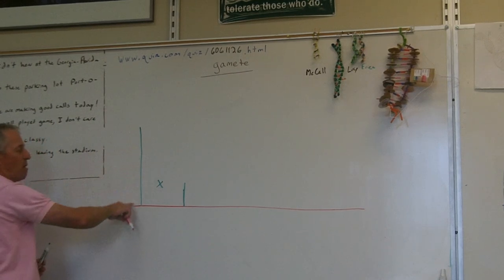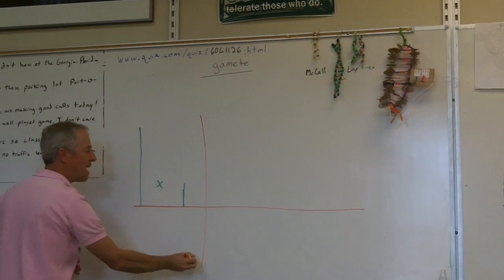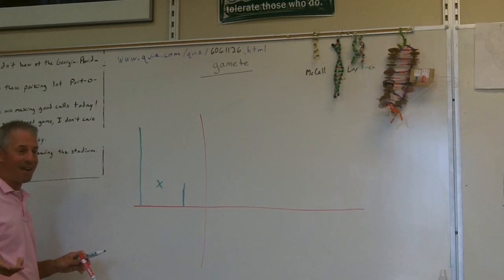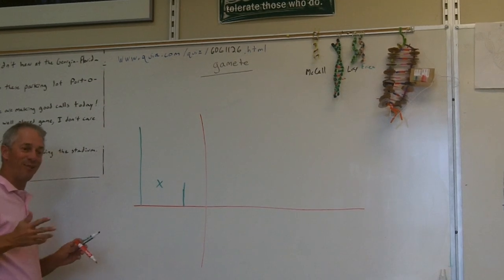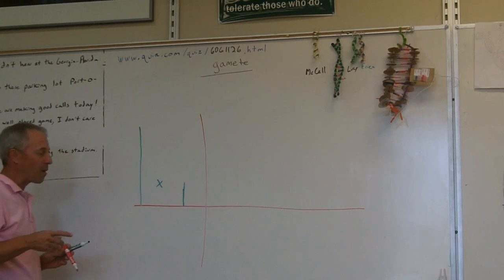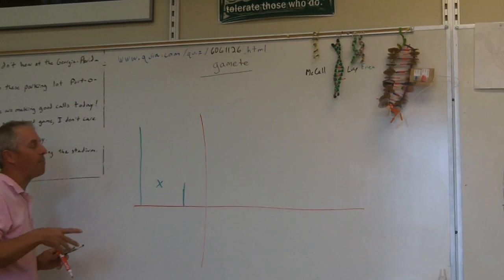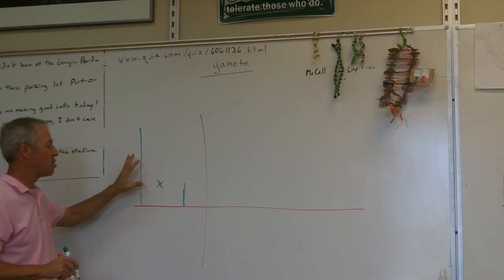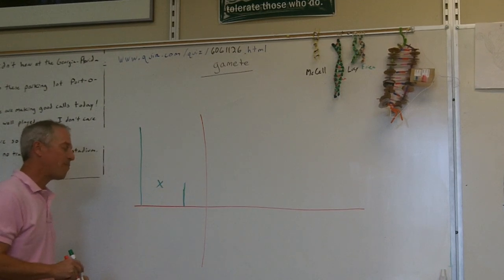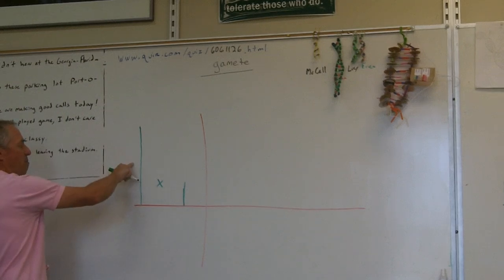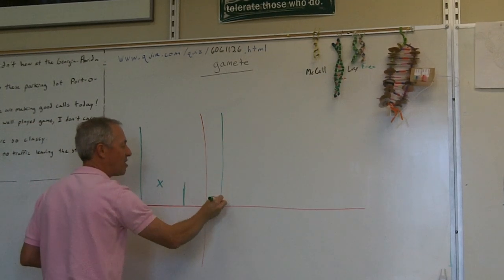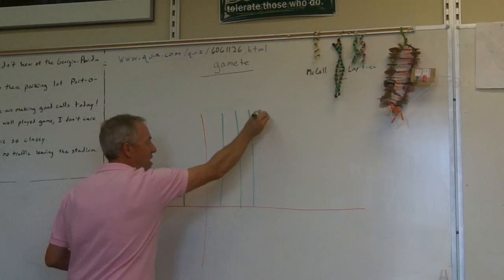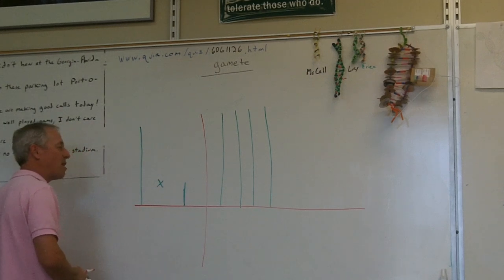If you mate a tall pea plant with a short pea plant, you would think you'd get medium pea plants, right? That's not what he got — that was the first surprise in his experiment. At the time, everybody thought blending theory was correct: you blend the traits of the two parents in the kids. But when he mated a tall pea plant with a short pea plant, he got all tall pea plants in the next generation. He had proven that blending theory is not always correct.